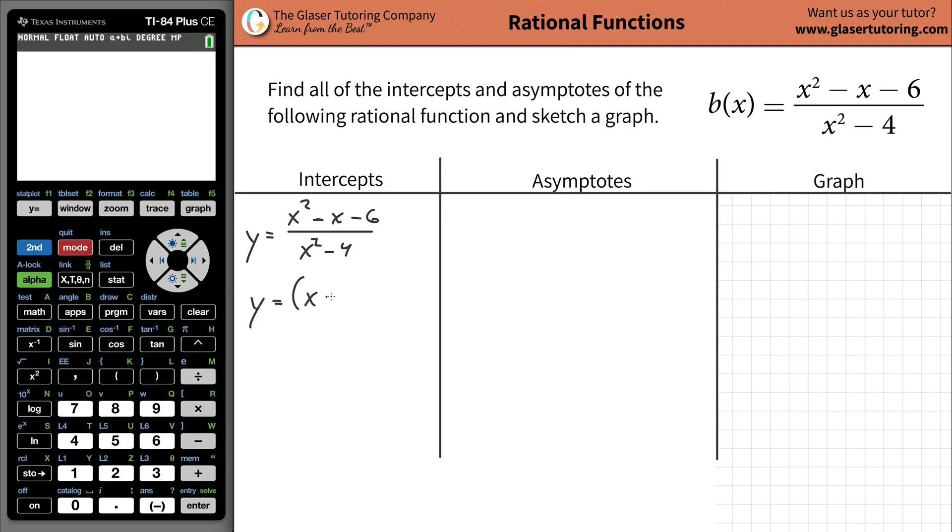Right? So that's simply going to be negative 3 and then a positive 2, right? They both multiply negative 3 and positive 2 to negative 6, but yet they're going to add to a negative 1. And then the denominator, notice we have a perfect square, so this simply works out to be x plus 2, and then x minus 2.